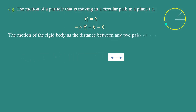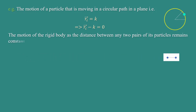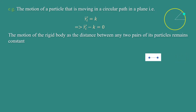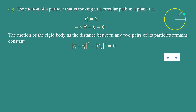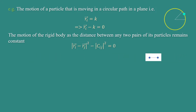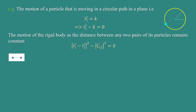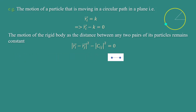Another example of a holonomic constraint is the motion of a rigid body, where the distance between any two pairs of its particles remains constant: |rᵢ − rⱼ|² − cᵢⱼ² = 0.